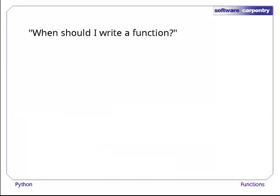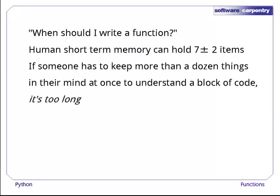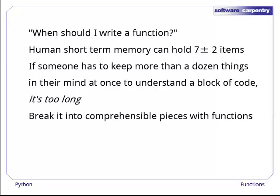To close off this episode, let's try to answer a frequently asked question. When should we write functions, and what should we put in them? The answer depends on the fact that human short-term memory can only hold about seven items at a time. If we try to remember more unrelated bits of information for more than just a few seconds, they become jumbled and we start making mistakes. In particular, if someone has to keep a dozen things straight in their mind in order to understand a piece of code, that code is too long.